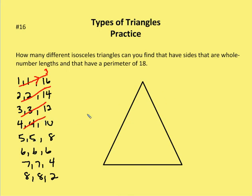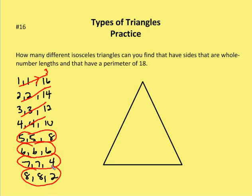5 plus 5 is greater than 8 — so that is a valid triangle. 6, 6, and 6: 6 plus 6 is greater than 6 — that's a valid triangle. 7 and 7 greater than 4 — that works. 8 and 8 greater than 2 — any two sides have to be greater than the third side. So I have four possibilities that meet the requirements of whole number side lengths with a perimeter of 18.